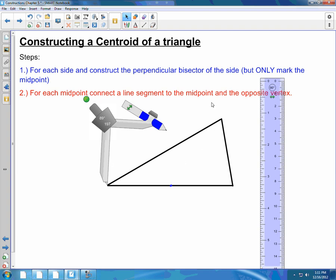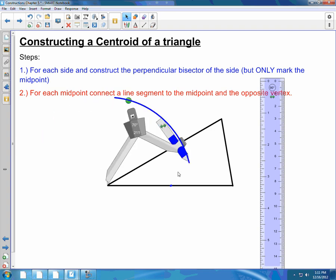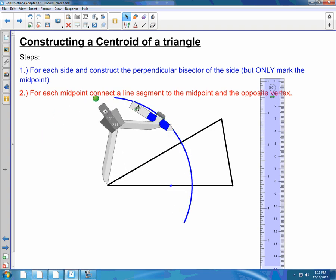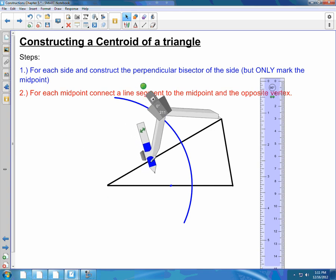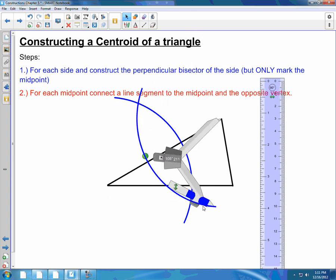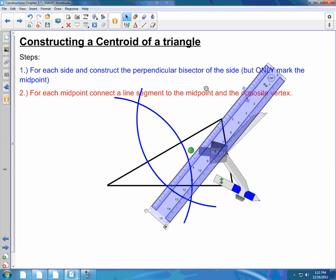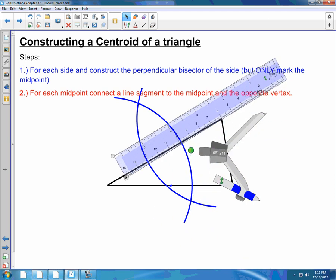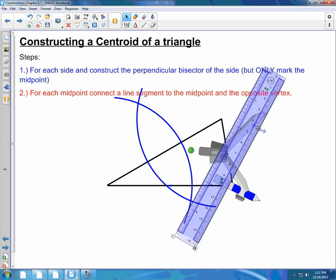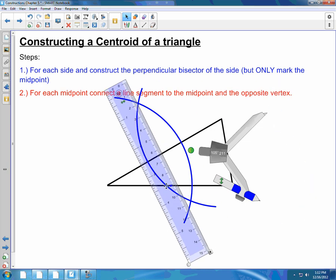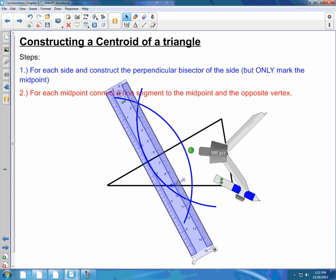I'm now going to work on this second side. I'm going to make sure I'm over half here. Open it up just a little. Again, draw an arc above and below. Go to the other endpoint of that side and draw an arc above and below. Take that ruler. Make sure that it lines up nice and mark that midpoint.